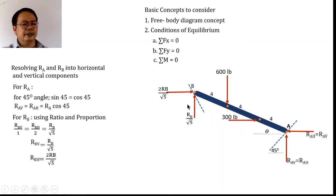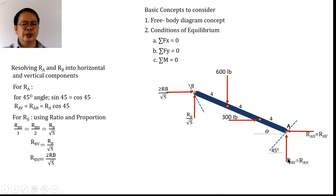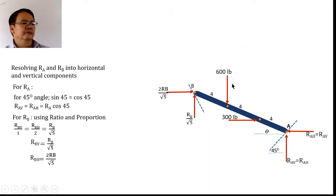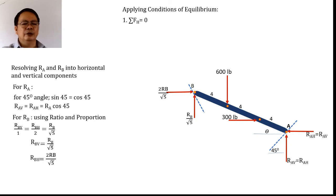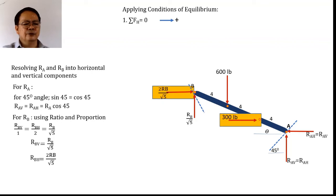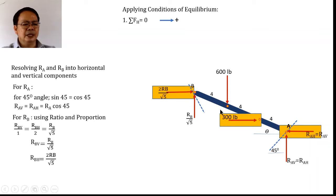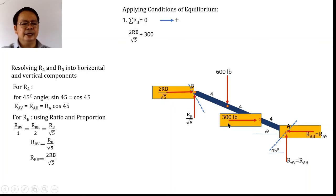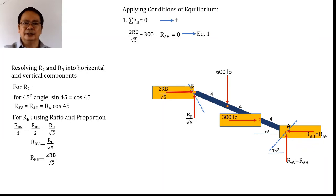After resolving all forces into components, we apply the conditions of equilibrium. Summing forces horizontally equal to zero, using rightward as positive: 2R_B/√5 + 300 − R_AH = 0. This is our equation one.